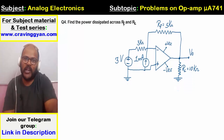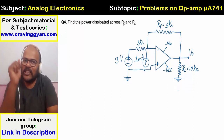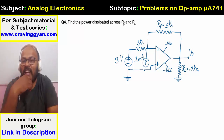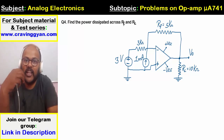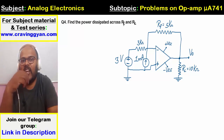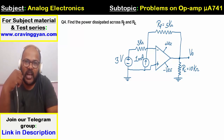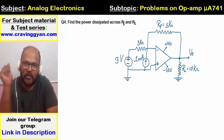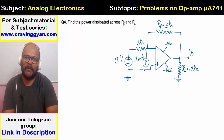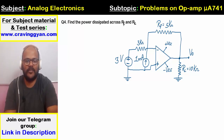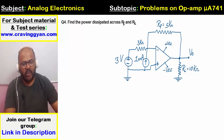Fourth question: they are asking about the power dissipated across resistors. In Q1 I talked about gain, Q2 was output voltage, Q3 was current into or out of the op-amp. Now Q4 asks: what is the power being dissipated across the resistors? This is a practical output source with 1 milliampere flowing upward and zero current into the op-amp.